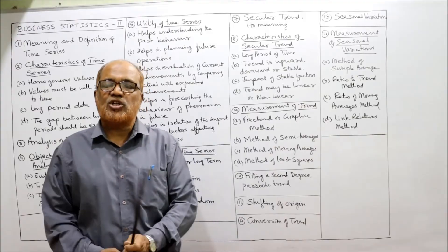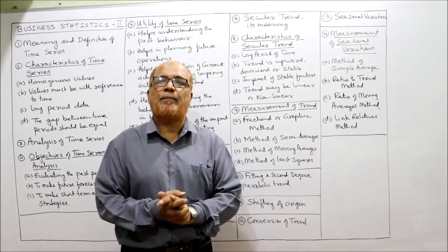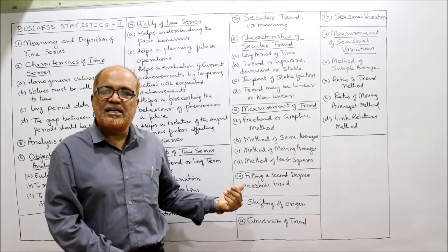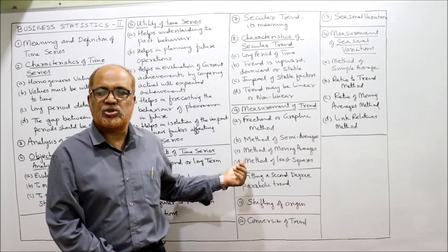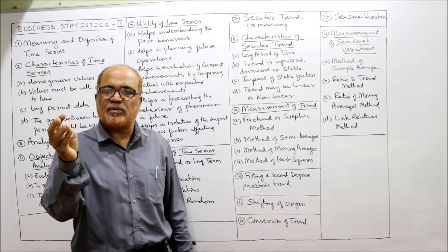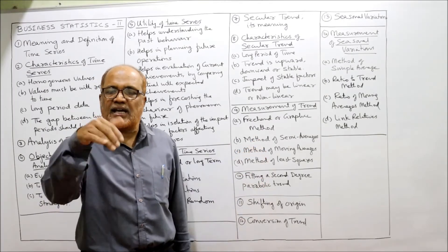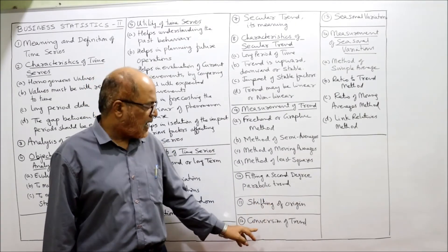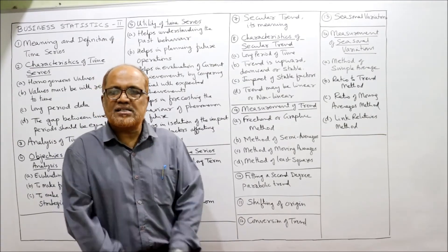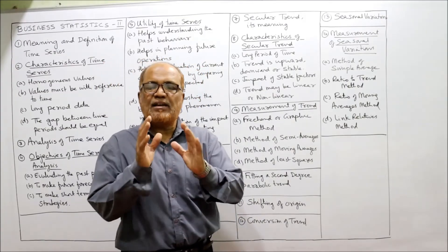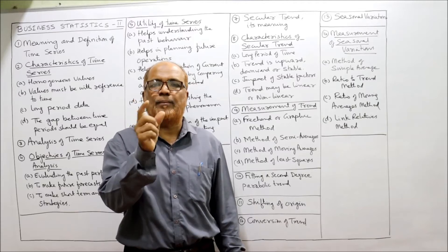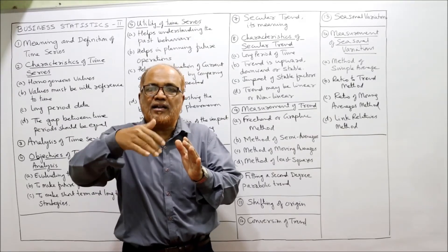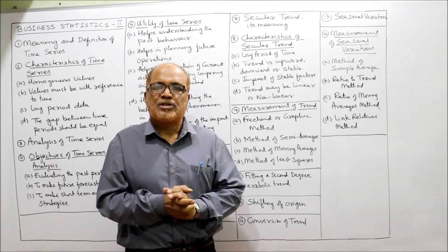Now, seasonal variation — the last topic in this theoretical part of time series analysis. We have three types of exercises: first, calculating trend values by freehand, semi-average, moving average, and least squares methods; second, problems on second degree parabolic equations, shifting the origin, and conversion of trend; and third, problems on seasonal variation. Seasonal variation means changes in the value of a variable within a year.